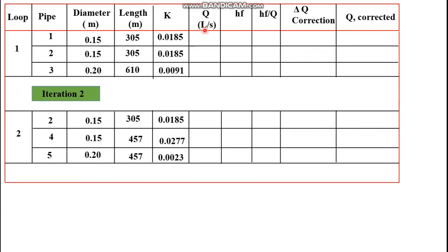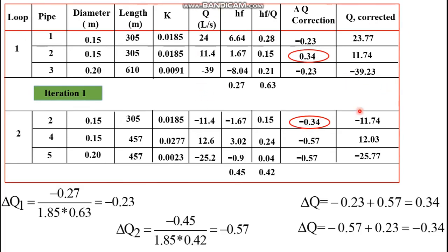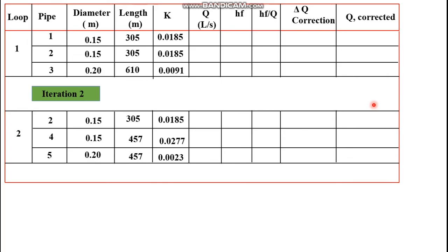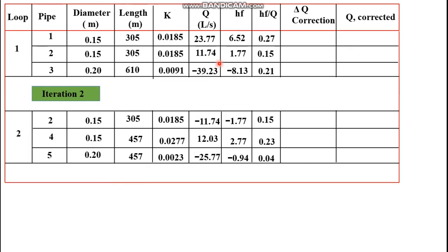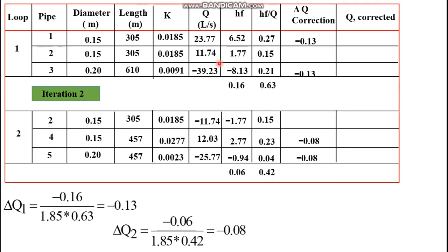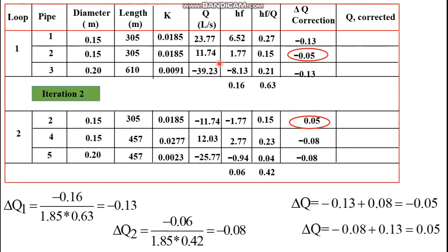For the second iteration, the assumed discharge is the adjusted discharge from the previous iteration. We similarly calculate the head loss and the ratio of head loss to discharge, then compute the correction for every pipe except pipe 2, followed by the correction for pipe 2, and finally calculate the adjusted discharge. As you can see, the summation of head loss now approximates zero — so this will be the final discharge for every pipe.